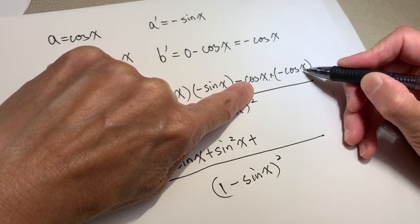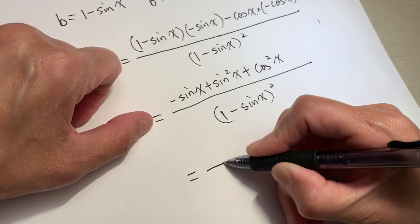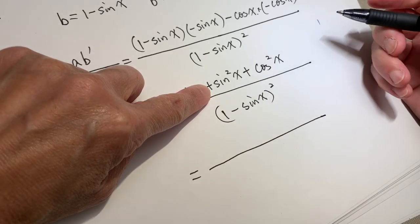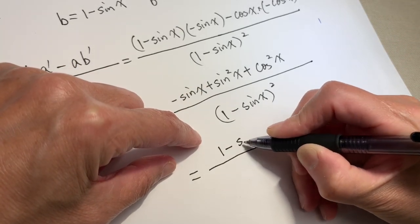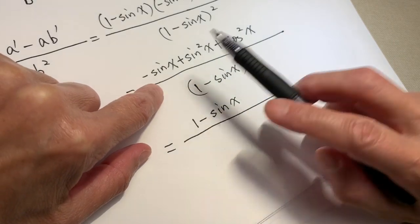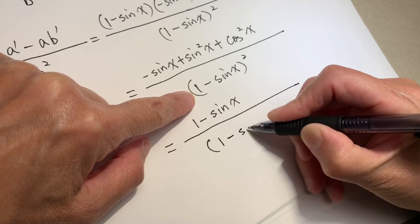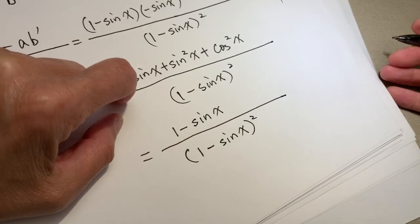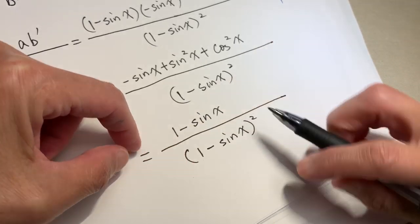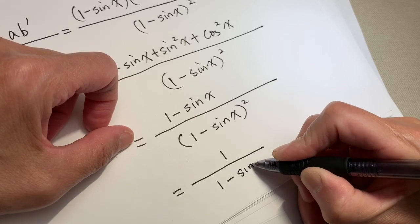Cosine x times cosine x is cosine squared of x. Now, sine squared x plus cosine squared x equals 1 — this is the Pythagorean identity. So the numerator becomes 1 minus sine x. The denominator is (1 minus sine x) squared, which is (1 minus sine x) to the power of 2. We can cross-cancel, and the result is 1 over (1 minus sine x).